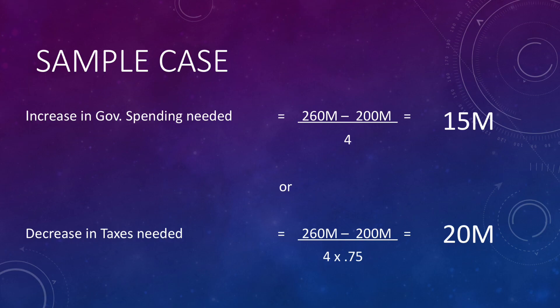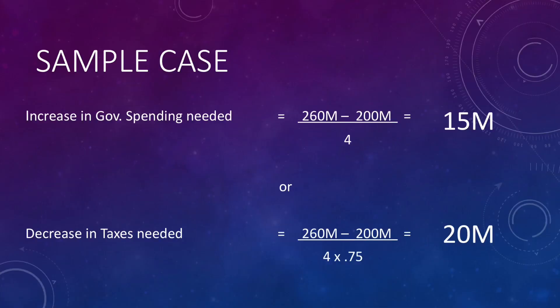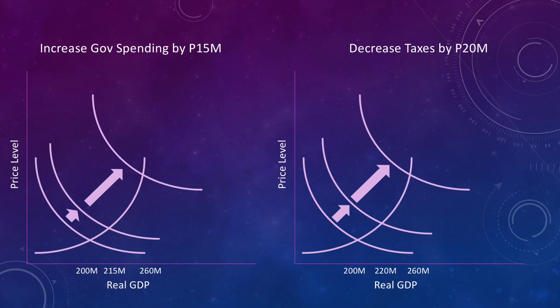The reason we calculate the necessary decrease in taxes differently reflects the fact that, unlike government spending where the government can dictate the exact amount to be spent, a decrease in taxes means consumers and producers will not necessarily increase their spending by the same amount as the tax reduction. As the marginal propensity to consume suggests, only 0.75 of an increase in income translates to additional spending. As such, we have the difference in calculation, giving a necessary decrease of 20 million. In summary, there should be a 15 million increase in government spending or a 20 million decrease in taxes, or a combination of the two.